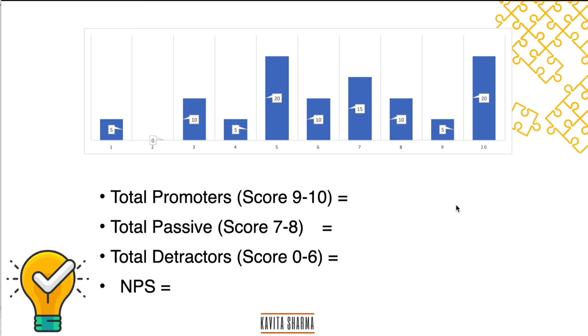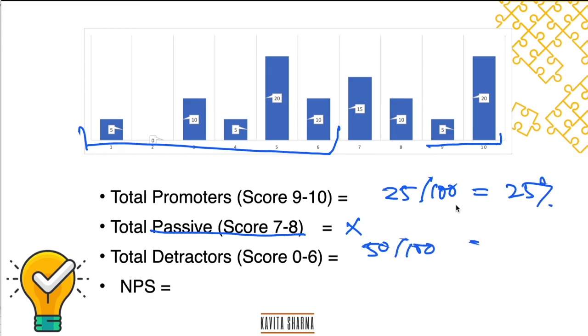So let's calculate the NPS right away with you. How many do I need to calculate passive people? I don't. How many promoters are there? You have 25 here. How many detractors are there? Just calculate, you have 50 here. What is total number of respondents? 100. So you can have 25 divided by 100 is 25 percent. 50 divided by 100 is 50 percent. What is the NPS? NPS is total promoters percentage minus total detractors percentage. Promoters were 25 percent minus 50 percent. You get a score of minus 25.